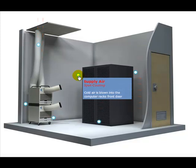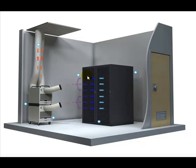And this shows the supply air. The cold air is blown onto the computer rack's front door. And that's pretty typical of the standard configuration.